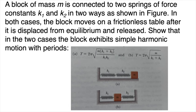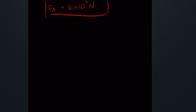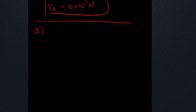Moving on to mechanical waves and oscillations. A block of mass m is connected to two springs of force constants k1 and k2 in two ways. In both cases the block moves on a frictionless table after being displaced from equilibrium. Show that the block exhibits simple harmonic motion: in case A the period is two pi times the root of m times (k1 plus k2) over (k1 times k2), and in case B the period is two pi times the root of m over (k1 plus k2).